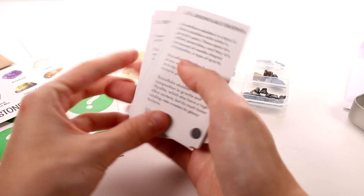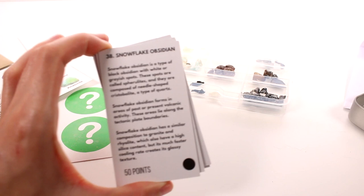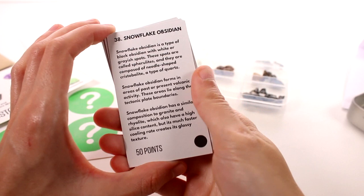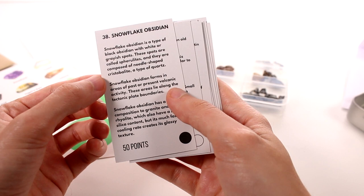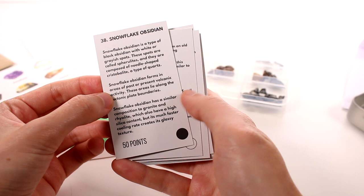So let's take a little look at our cards. Since snowflake obsidian is my favorite one out of the ones we got, let's read a little bit about it. So let me get this to focus. The snowflake obsidian is a type of black obsidian with white or gray spots. These spots are called spherulites and they are composed of needle-shaped crystals of cristobalite, a type of quartz.